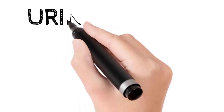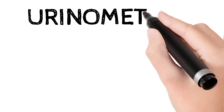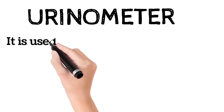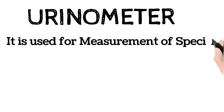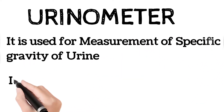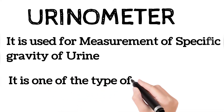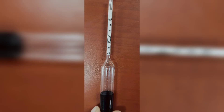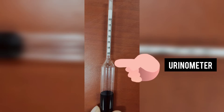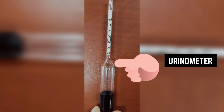Hello everyone, hope this video finds you all in good health. I am Dr. Parth and today I am going to teach you about the urinometer instrument. This particular instrument is used for measurement of specific gravity of urine. The urinometer is an example of, or one type of, hydrometer. This diagram shows a urinometer that can be asked in your practical exam or in MCQs.